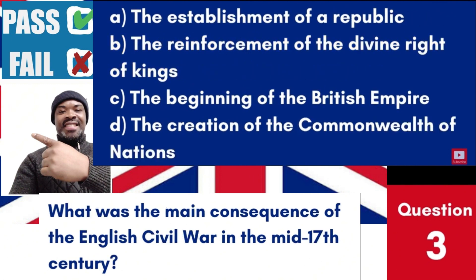Question 3: What was the main consequence of the English Civil War in the mid-17th century? a. The establishment of a republic. b. The reinforcement of the divine right of kings. c. The beginning of the British Empire. d. The creation of the Commonwealth of Nations. Answer: a. The establishment of a republic. The main consequence of the English Civil War was the establishment of a short-lived republic, the Commonwealth, under Oliver Cromwell.